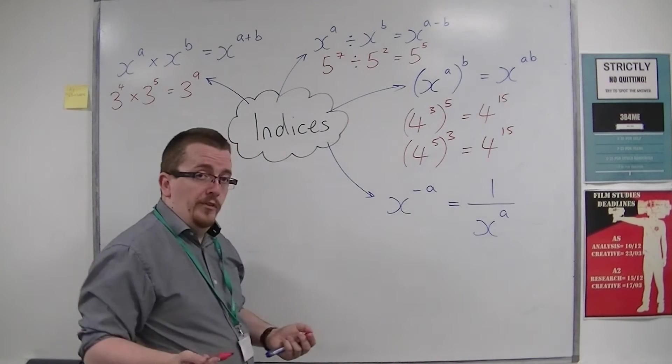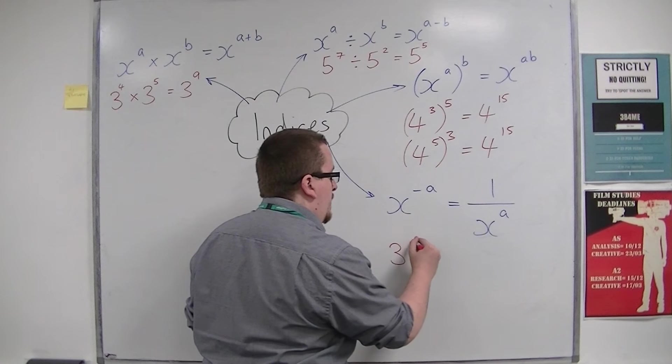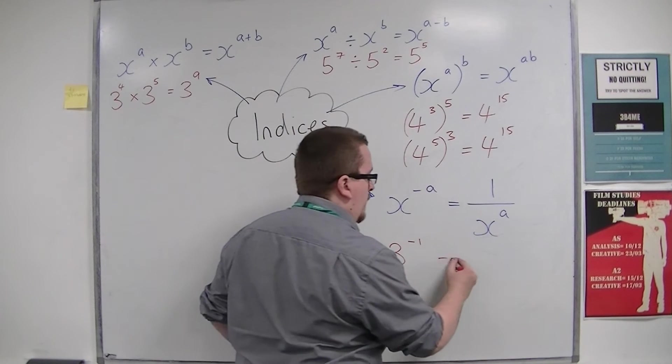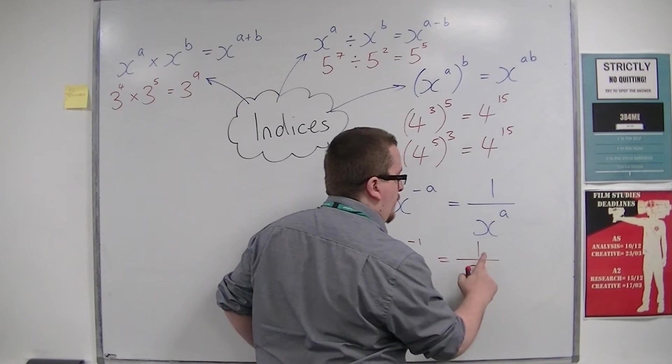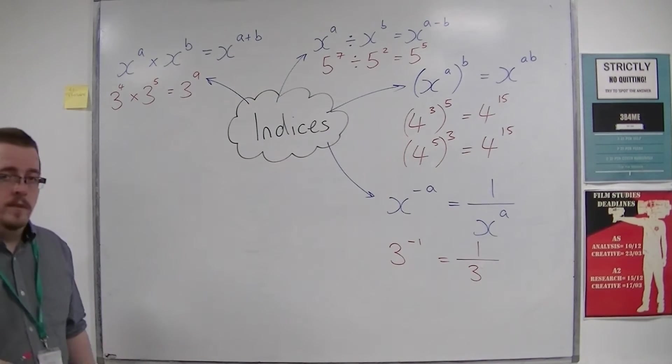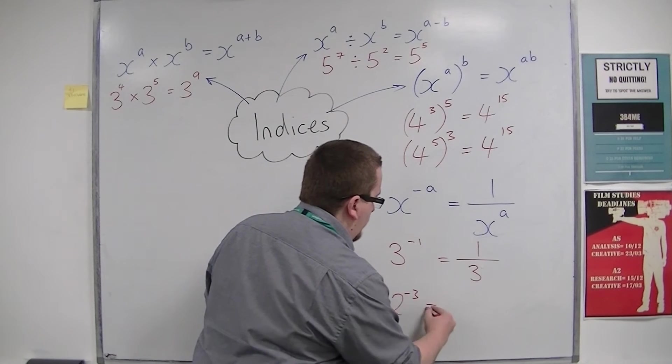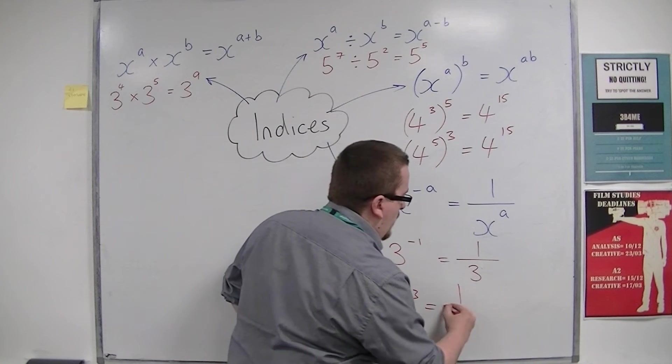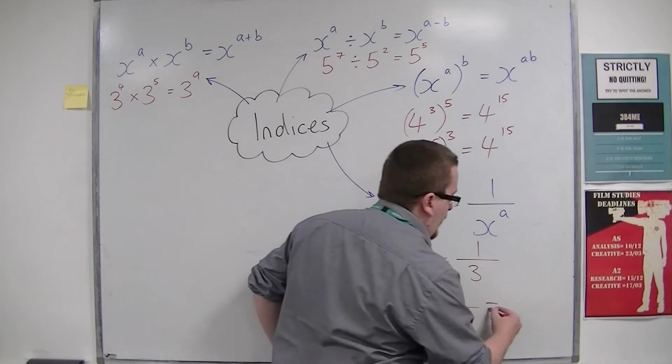Examples of this are 3 to the power of minus 1 would be 1 over 3 to the 1, so just 1 over 3. 2 to the power of minus 3 would be 1 over 2 cubed, which is 1 over 8.